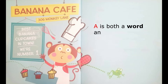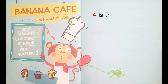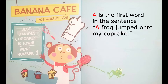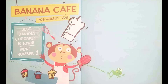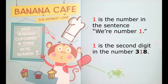A is both a word and a letter. One is both a number and a digit. A is the first word in the sentence, 'A frog jumped onto my cupcake.' A is the fifth letter in the word 'cupcake.' One is the number in the sentence, 'We are number one.' One is the second digit in the number 318.